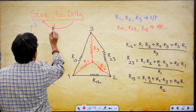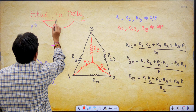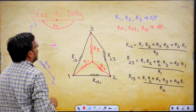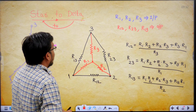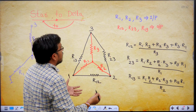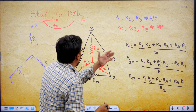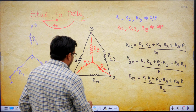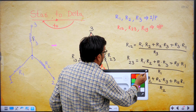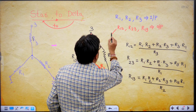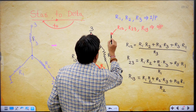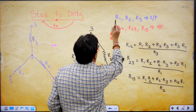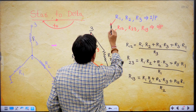Now I will explain how a delta network is converted into its star network. The question is delta to star. Now the inputs are R12, R23, R13, and R1, R2, R3 are outputs.